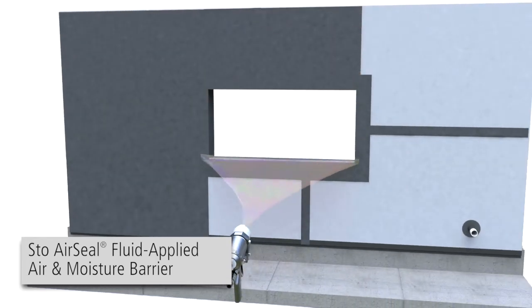The Stowe Ventec system utilizes Stowe AirSeal, part of the Stowe Guard family of air and moisture barrier products. Stowe AirSeal is a fluid applied air and moisture barrier that can be applied by spray or roller to a variety of substrates to create a continuous seamless waterproof air and moisture barrier beneath the Stowe Ventec rain screen system.